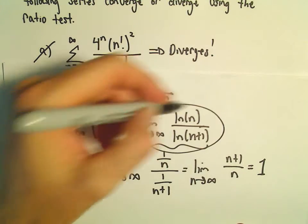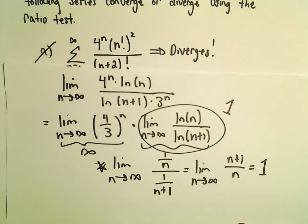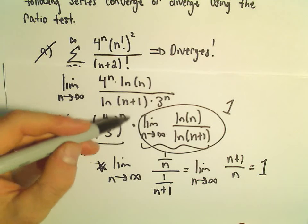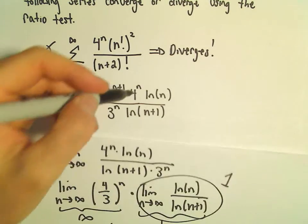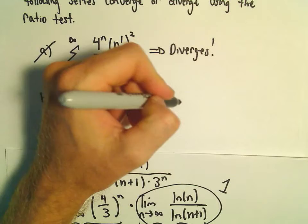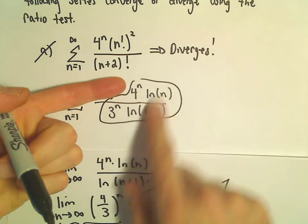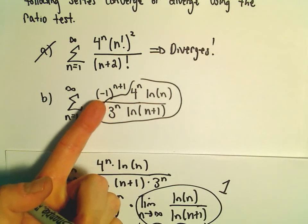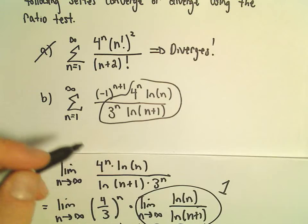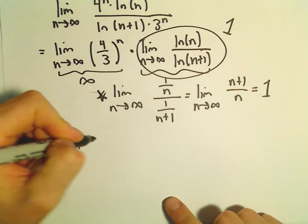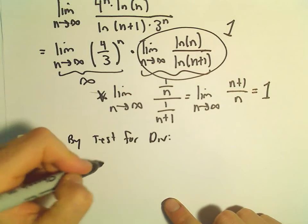So this second factor, its limit's going to equal 1. The first part, we said that's going off to infinity. Again, 4 thirds is a number larger than 1. If you start multiplying that by itself, as n increases, it'll get arbitrarily large. So really, this limit is going to alternate between, for large values of n, we'll get positive infinity here. But then it's going to alternate back and forth between a big negative number and a big positive number. So this limit simply wouldn't exist. So by the test for divergence, our series would simply be divergent.